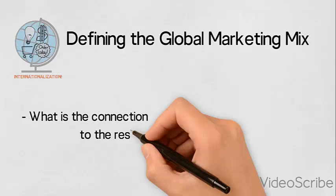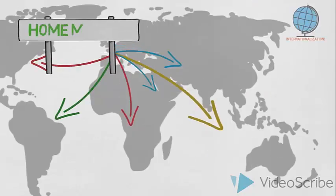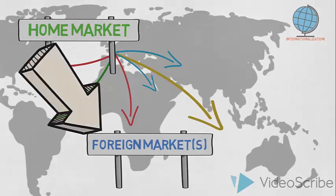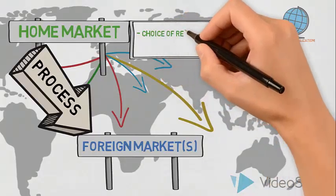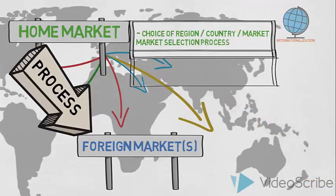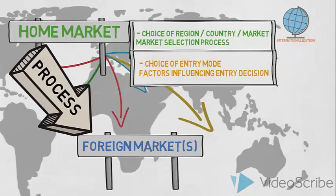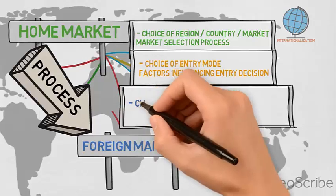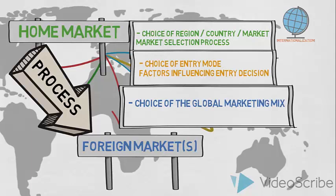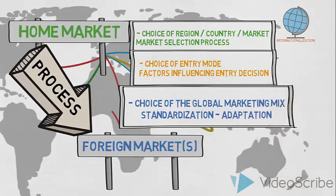How is the choice of the global marketing mix connected to the rest of the internationalization process? When an organization goes from marketing their products and services only on their home market to also targeting one or several foreign markets, we talk about an organization's internationalization process. The process starts with a choice of which foreign markets to target — the market selection process. Secondly, we decide how to organize our entry to the foreign market, evaluating different factors and deciding on which entry mode to use. Ultimately, we define our marketing mix — the four or seven P's — for the foreign markets, addressing factors that influence our choice regarding standardization and adaptation.